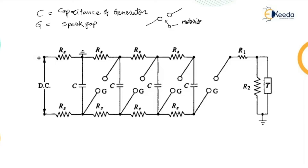The spark gap has two electrodes, and the third electrode is controlled either manually or automatically by motorized control. It is placed in between the two conductors. Movement of this third conductor between the two conductors reduces the gap and hence the spark takes place. Another way of getting the spark is by reducing the distance between the two electrodes.